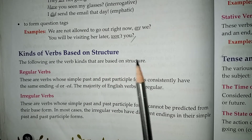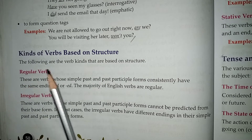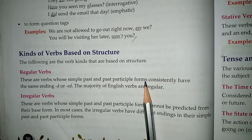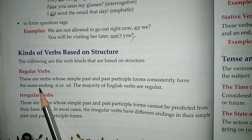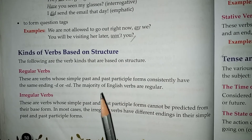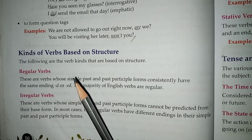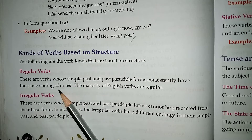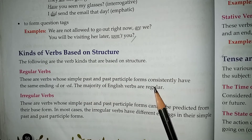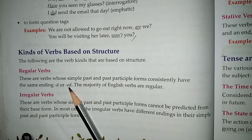The first kind based on structure is regular verbs. These are verbs whose simple past and past participle forms consistently have the same ending: -d or -ed. The majority of English verbs are regular. This means that their second and third forms — past and past participle — end in -d or -ed.